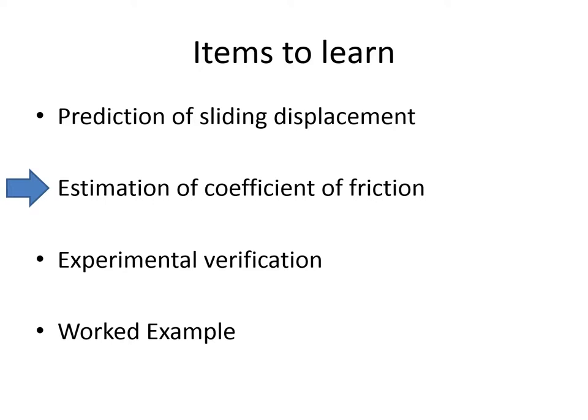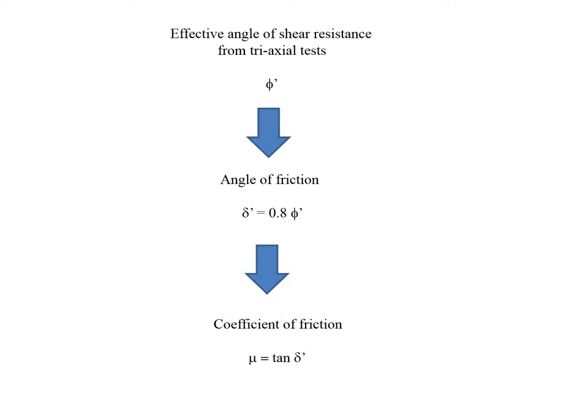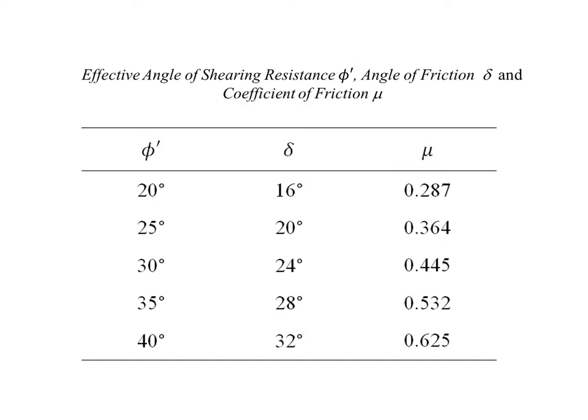An important component of the calculation method is accurately estimating the coefficient of friction. The angle of shear resistance φ' is a well-known parameter for geotechnical engineers, but that must not be confused with the coefficient of friction. This slide shows the transformation from φ' to coefficient of friction μ. This table enables the designer to read off the value of the coefficient of friction μ for any given value of φ'.